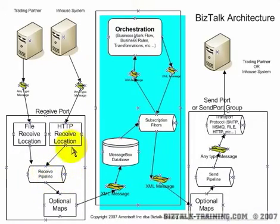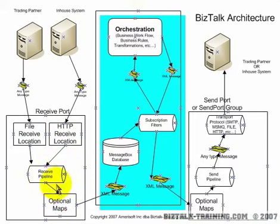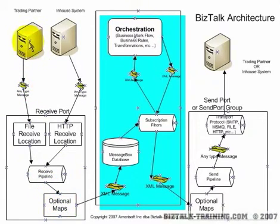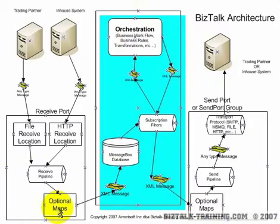Now the receive pipeline actually goes on the receive location. But why would you have multiple receive locations in the same port? Because a port is where you can turn on tracking and where you can specify different maps. So if you had three different companies — IBM, Gateway, Dell — sending you orders, it's possible they say this is the type of order we're going to send you. Within your system, you would translate that order using XSLT maps into your standard common purchase order, for instance.